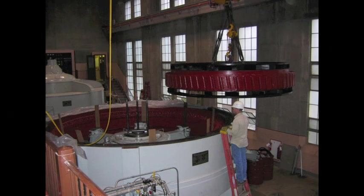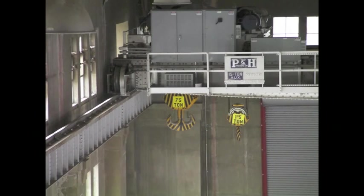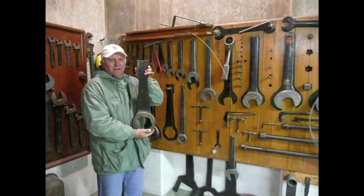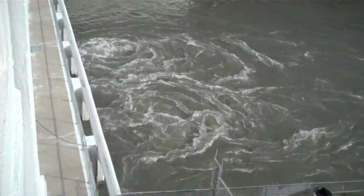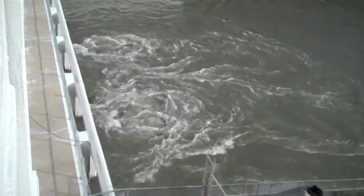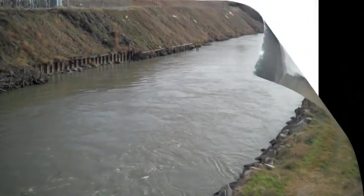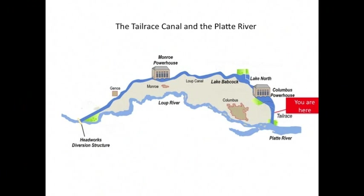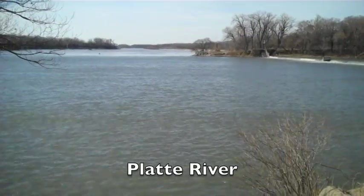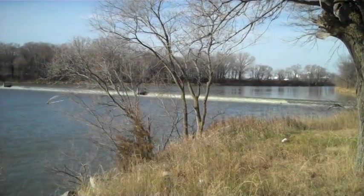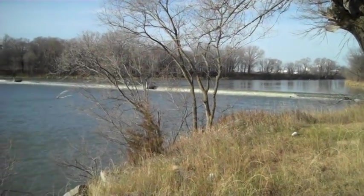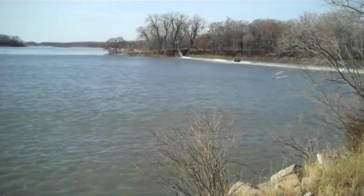All this equipment must be taken care of. When maintenance needs to be done, they might use a 75-ton crane or these enormous tools. The water has once again finished doing its job of producing electricity and now exits the Columbus Powerhouse. It goes into the Tail Race Canal and is on its way to its final destination — the Platte River. The length of the Tail Race Canal from the Columbus Powerhouse to this point is 5 and a half miles.